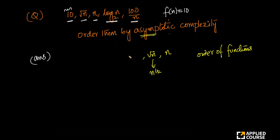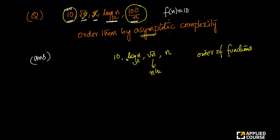Similarly, we know that log n — so this is taken care of, this is taken care of, then we have log n. This is constant, this is basically constant, and this is also a function of n. Now the question is: between these two, how do you order?